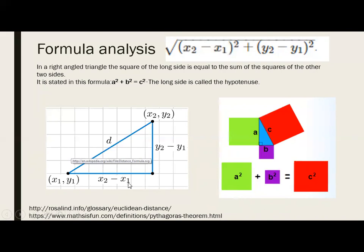The Pythagorean theorem tells us: if you draw a square on the longest side c of a right-angle triangle, it equals the sum of squares on sides a and b — so a² + b² = c². Since we want c, we take the square root: c = √(a² + b²). Applied to our diagram: d = √((x2 - x1)² + (y2 - y1)²), which is exactly our Euclidean distance formula.